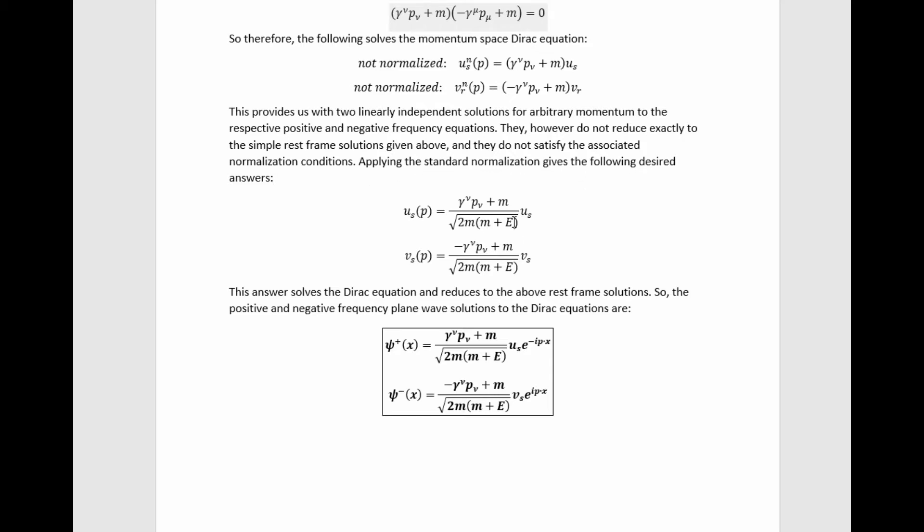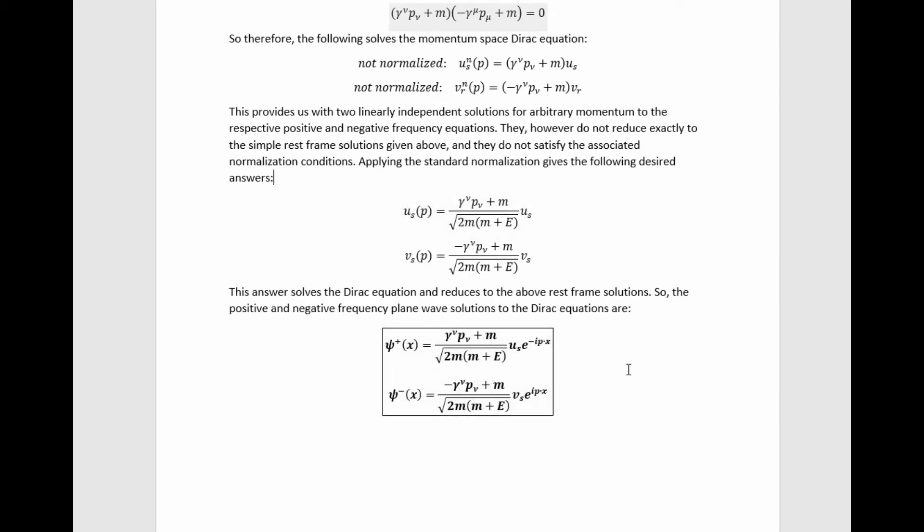Applying the standard normalization gives these results. This is the standard normalization that yields agreeance with the rest frame case that we selected previously. This answer solves the Dirac equation and reduces to the above rest frame solutions, so the positive and negative frequency plane wave solutions to the Dirac equation can be found simply by plugging these values we've found for these momentum-dependent spinors back into the original ansatzes, which gives us these final beautiful results.